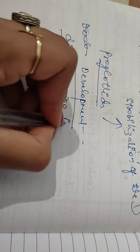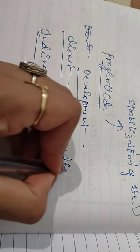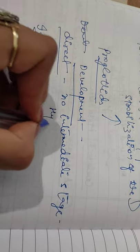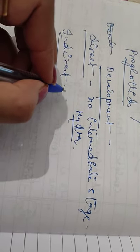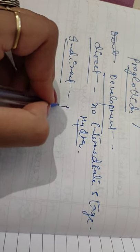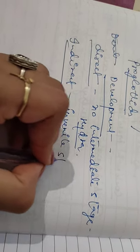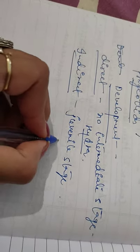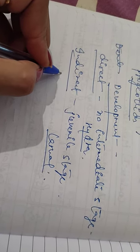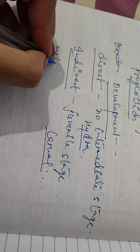Development can be either direct or indirect. In direct development there is no intermediate stage — for example hydra, which develops directly. In indirect development the organism passes through different juvenile stages, meaning there is a larval stage. This is called indirect development, also called metamorphosis.